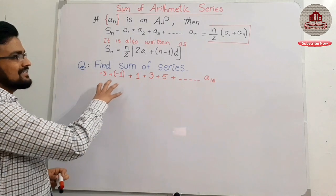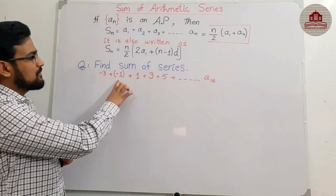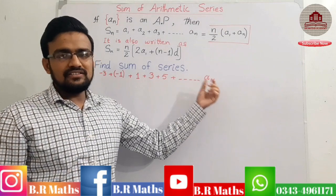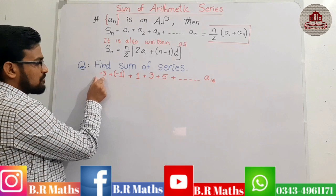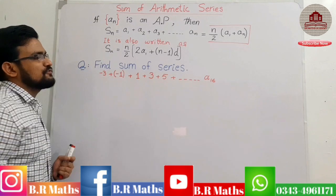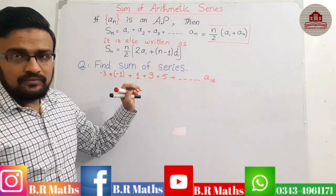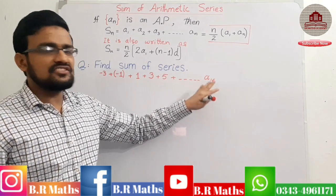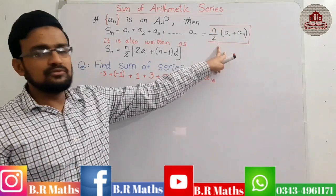We will find the sum of the series given in the example: minus 3, minus 1, 1, 3, 5, and so on up to a16, meaning the 16th term. Since the value of a16 is not given — a_n is not given — we cannot use the first formula.